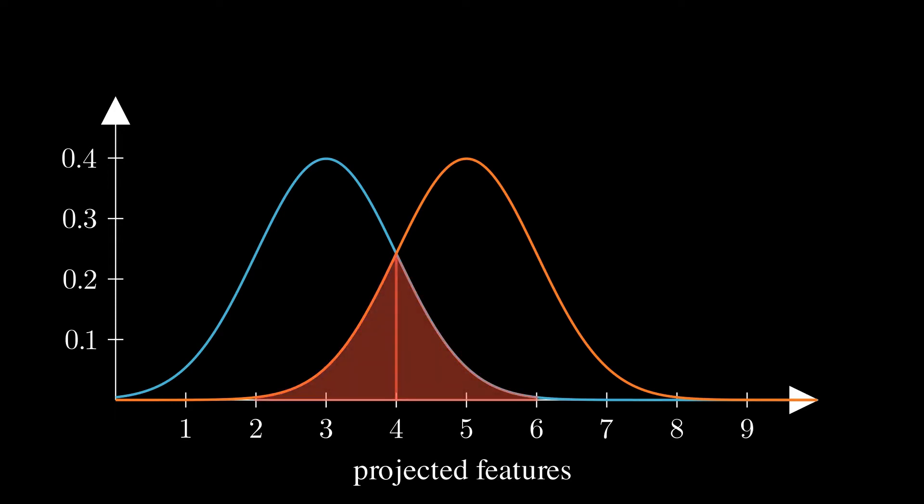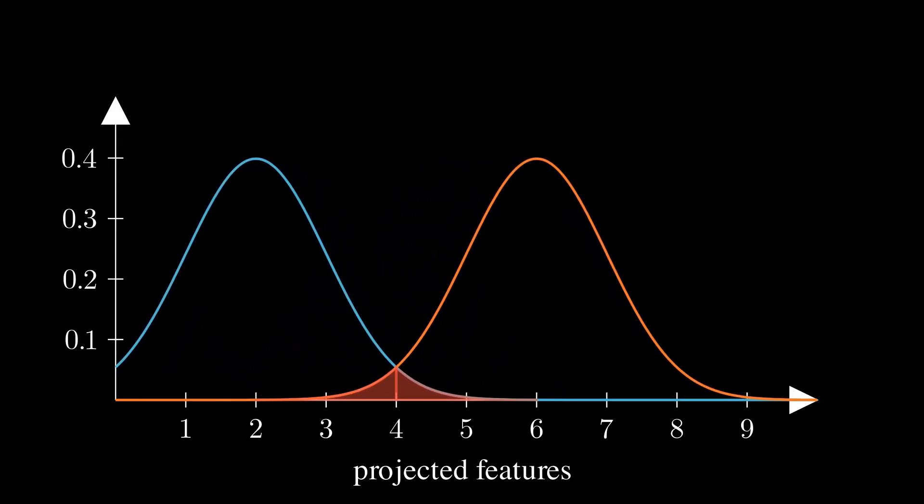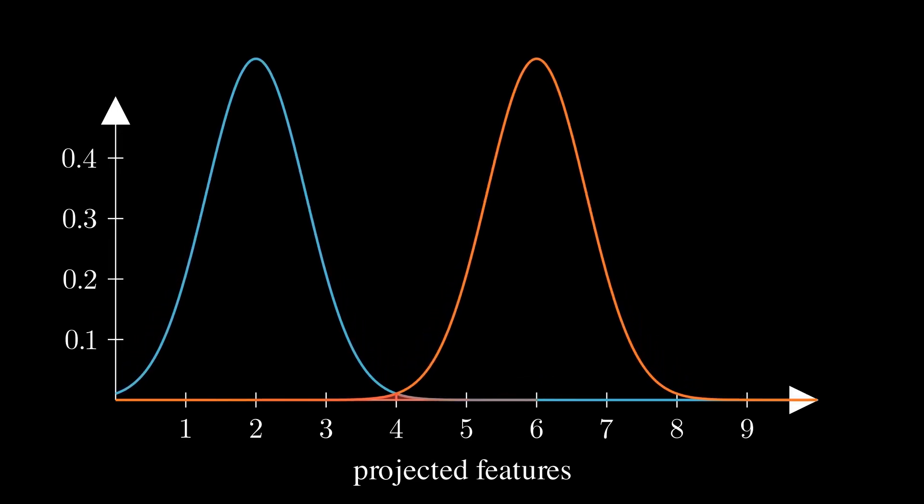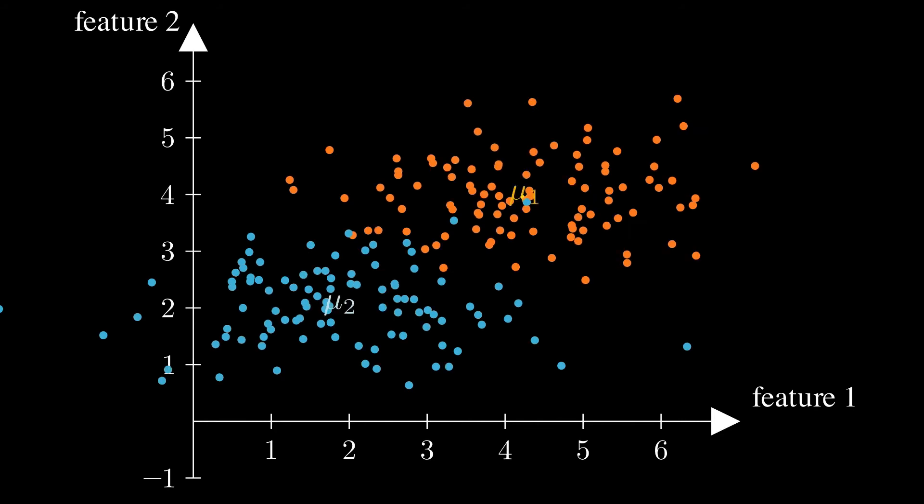If we now again look at two one-dimensional projected distributions, we can better see that we don't have the best separability, since we have the mentioned overlap. In that area, it's not safe to say to which class the data would belong. To have the best separability, we want the distributions in projected space to be as far apart as possible. So, in other words, the means have to ideally be distant to each other. Plus, we want to have as little variance as possible, so that the data spreads far less, and they again overlap even less.